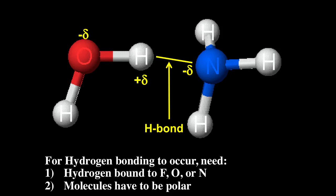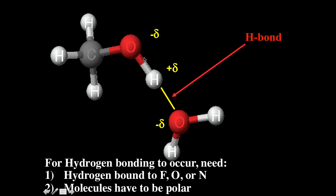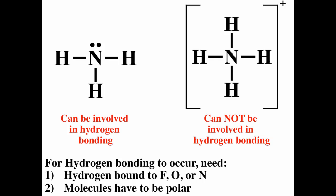You can have hydrogen bonds between the same type of molecule or different types. For water and ammonia, hydrogen bound to oxygen is attracted to the nitrogen — that's the hydrogen bond, mainly electrostatic interaction. For hydrogen bonding, you need hydrogen bound to fluorine, oxygen, or nitrogen, and the molecules must be polar. Similarly, for methanol and water, hydrogen bound to oxygen is attracted to the other oxygen — again a hydrogen bond.